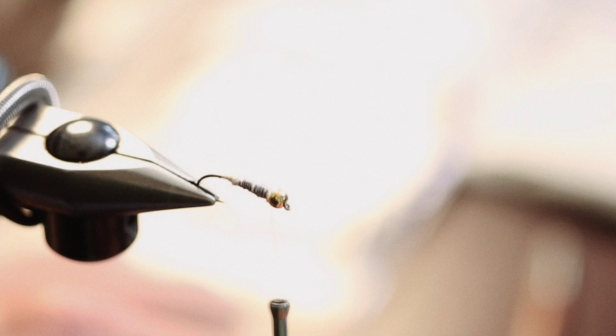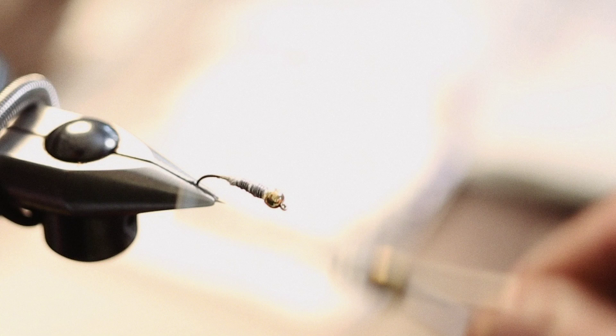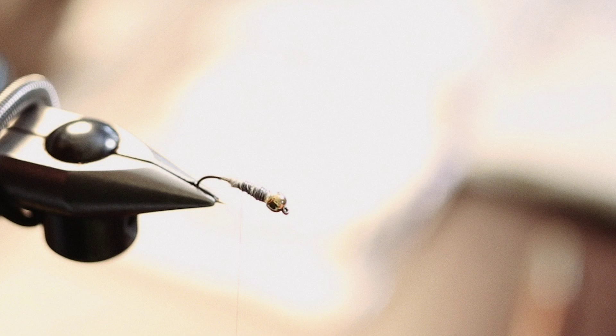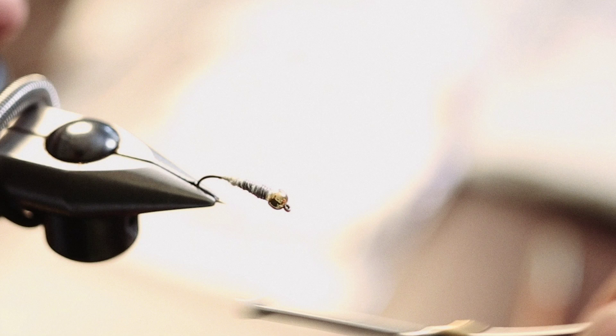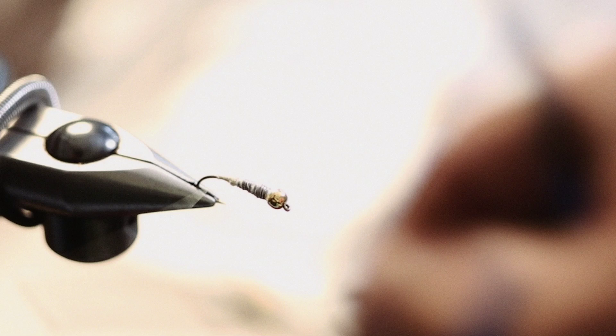That's going to give us a nice heavy fly. We've got tungsten bead, we've got several wraps of lead wire. Now we're going to wrap our tying thread through the wire loosely. When we get to the end of the lead wire, we're still on top of the cotton. We're going to taper this down so we have a nice tapered section that we're going to tie our fly over.